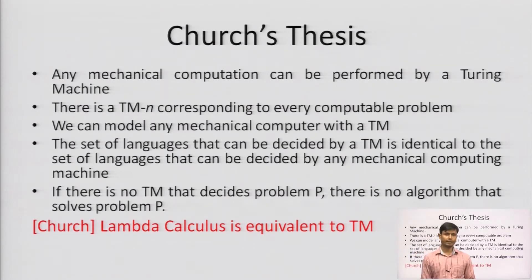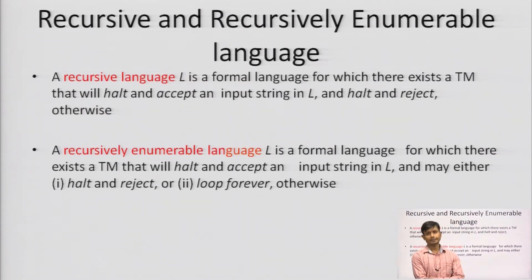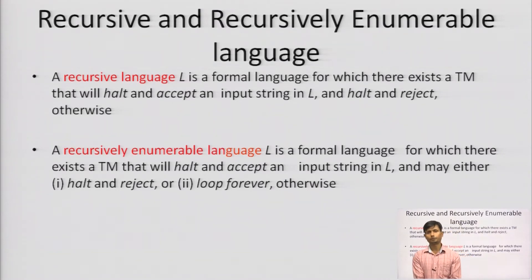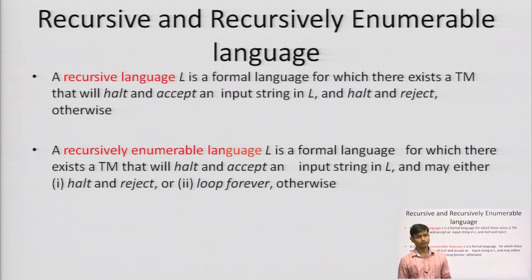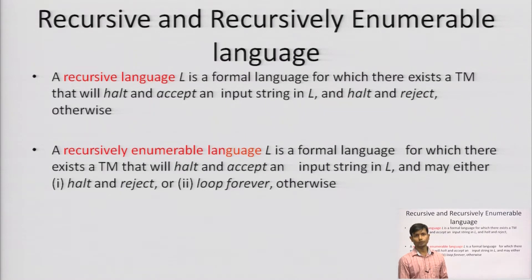There are two kinds of algorithms: decidable and undecidable. First, we will look at recursive and recursively enumerable languages. A recursive language is one accepted by a halting Turing machine. For each and every input it will show either accept or reject. For example, if you have a regular language and draw a finite automaton, whatever string you take, the diagram will show you either accept or reject. This is a recursive, or decidable, language.